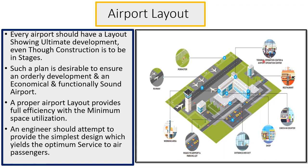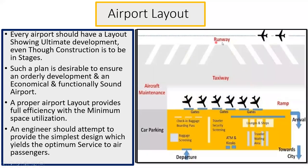You can see this type of layout — what I have put here is the control tower and this is the landing runway. There are other terminal areas and all. Again, you can see there's a runway here, then we have aircraft maintenance, then we have a taxiway here, and this is the terminal area and all other things.